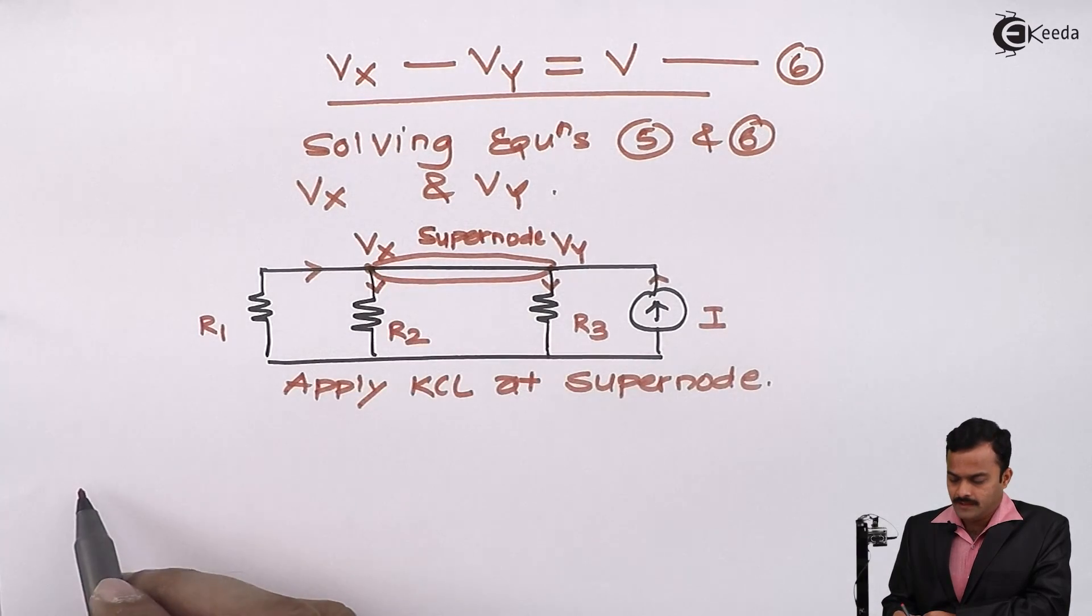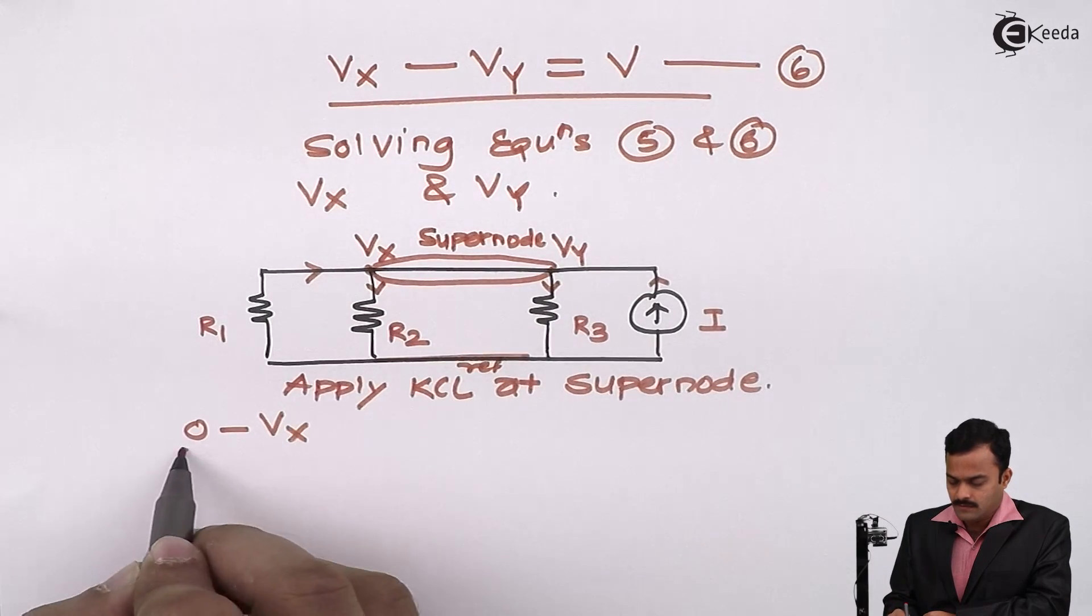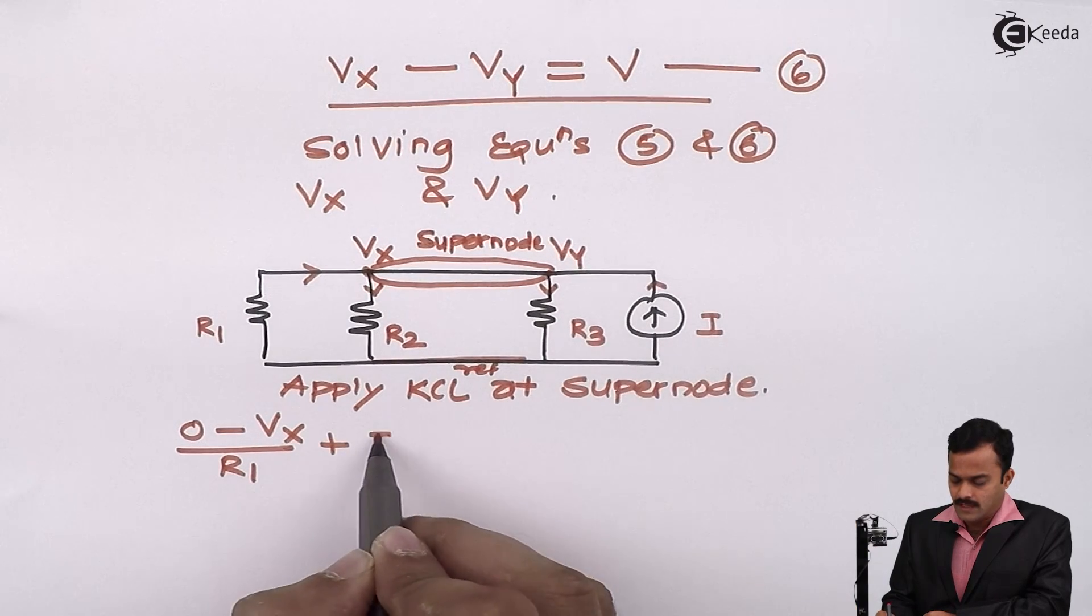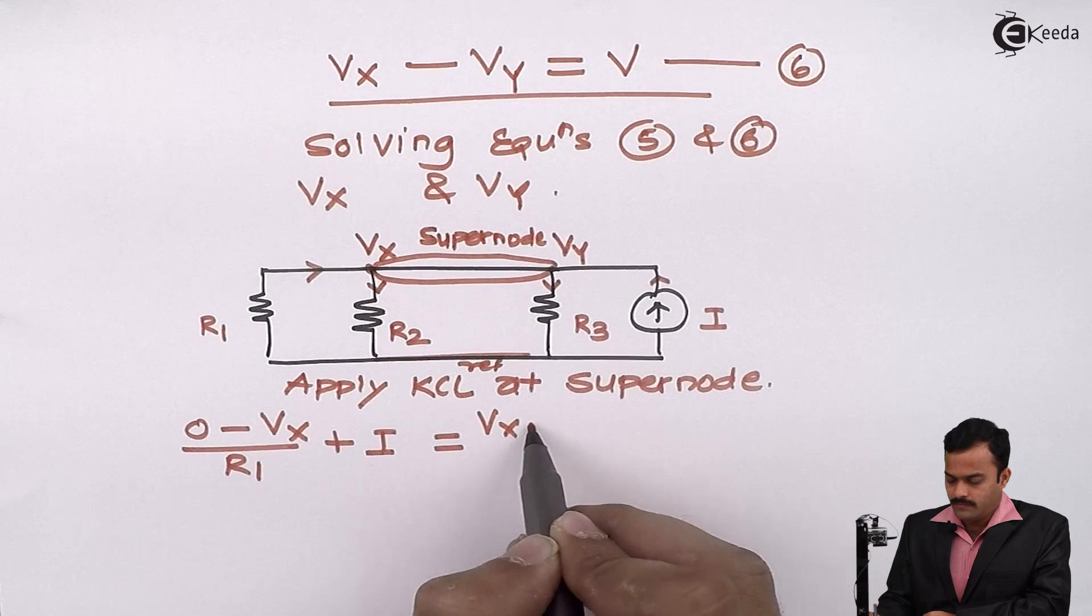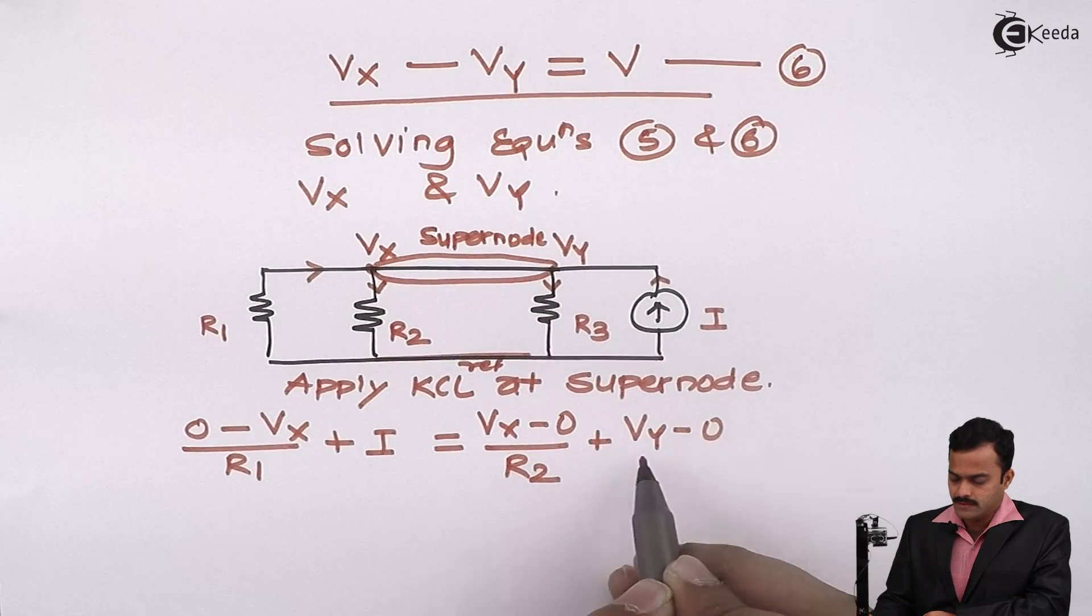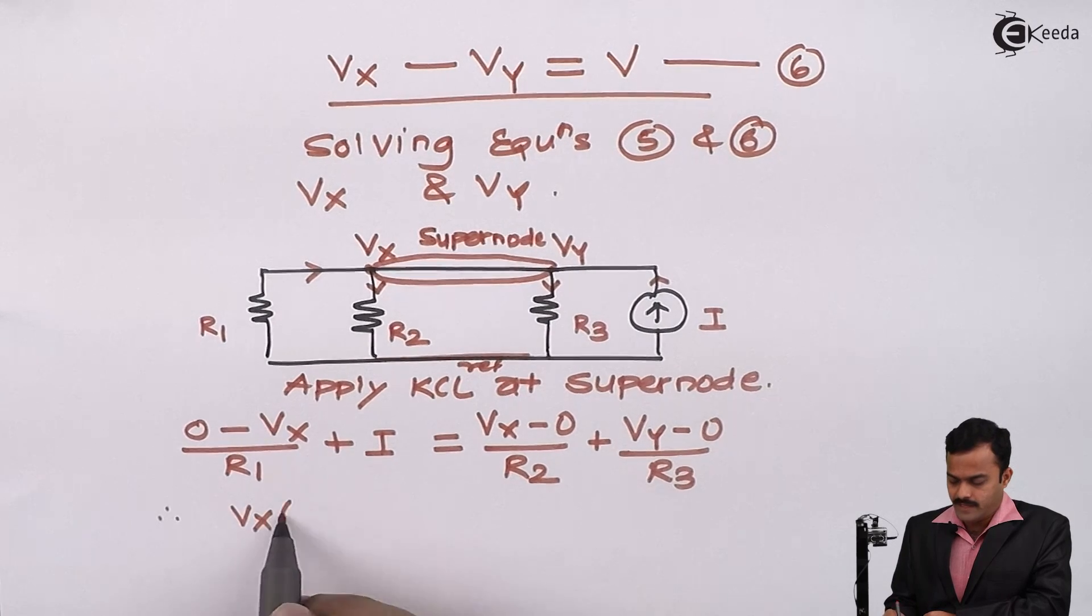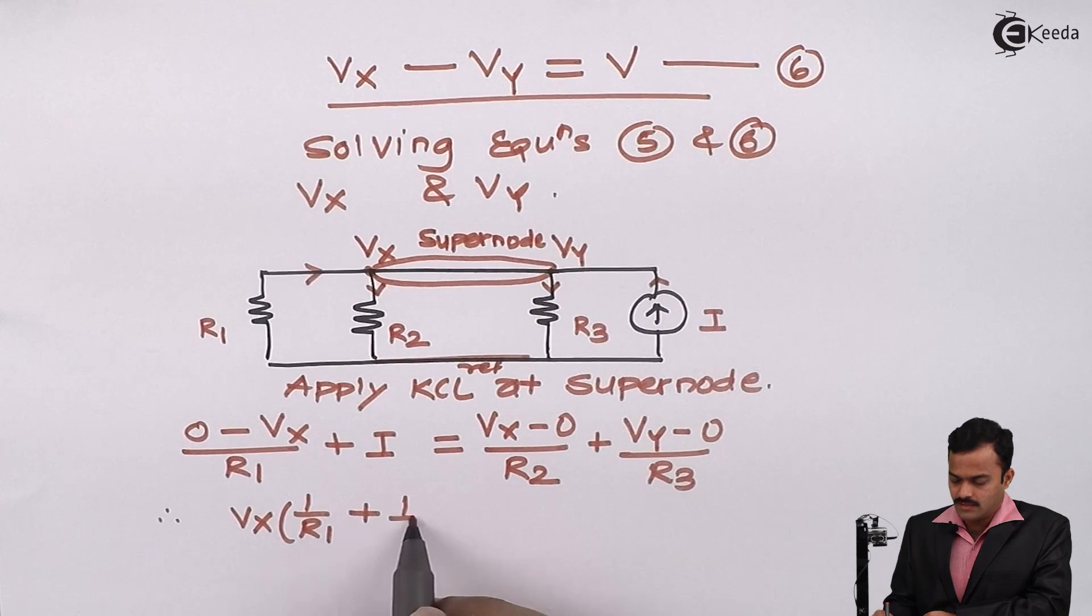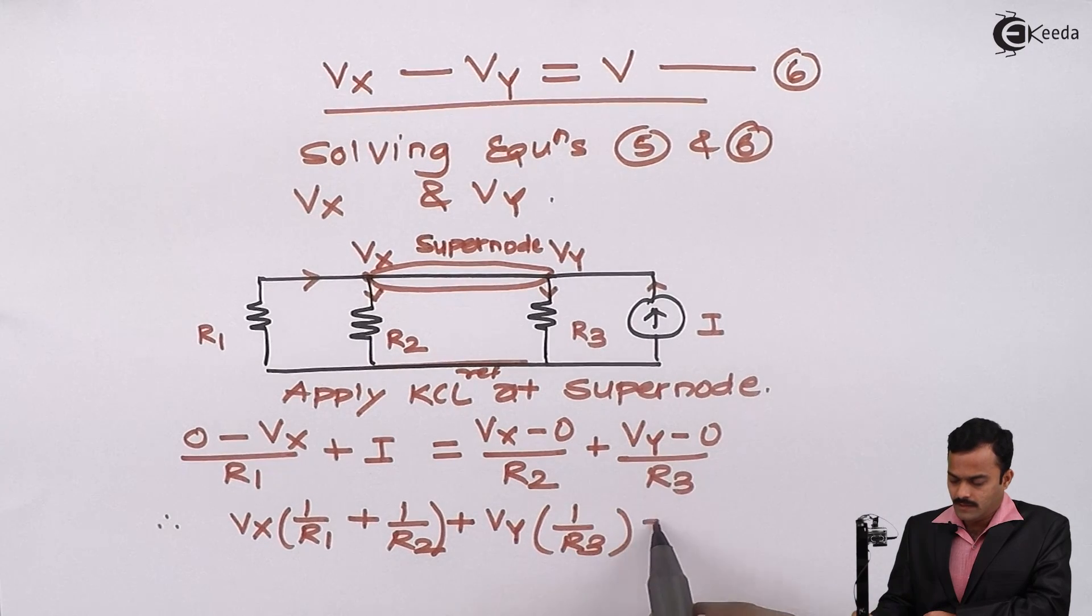So for super node, I am having these two incoming currents. So I will write equations. So for this current, it is starting from this reference and ending on Vx divided by R1. So this current is I because it's a current source equal to outgoing currents. Two outgoing currents. One is at this node Vx minus 0 divided by R2. And for this node, it is Vy minus 0 divided by R3. And after rearranging the terms, I will get Vx in a bracket 1 upon R1 plus 1 upon R2, Vy 1 upon R3 equal to I.